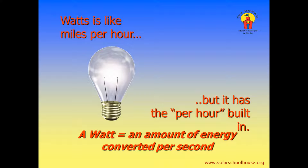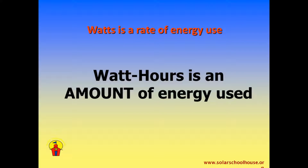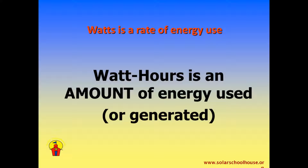Watts is like miles per hour, but it has the per hour built in. A watt equals an amount of energy converted per second. Watts measure how quickly we convert energy — how fast we produce or use electricity. Now that we can talk about the rate of energy being converted in watts, how do we describe the amount of energy converted? Is there another unit to measure this? The watt hour. Watt hours tell us the amount of energy that is being used or produced over time. Watts tell us the rate at which this energy is being converted at a single point in time.